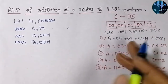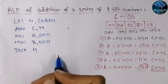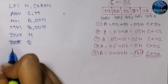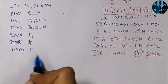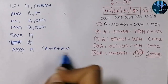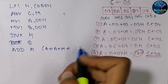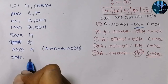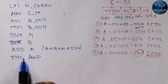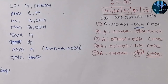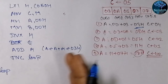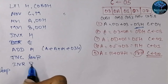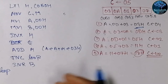We use INXH to point to and input the first data element. Then we perform ADD M, so A equals A plus M — that is, 00 plus 03, giving 03 hex. After addition, we check whether a carry is generated using the JNC instruction. If no carry, we jump ahead; if carry is generated, we increment register B using INR B to store the carry count.